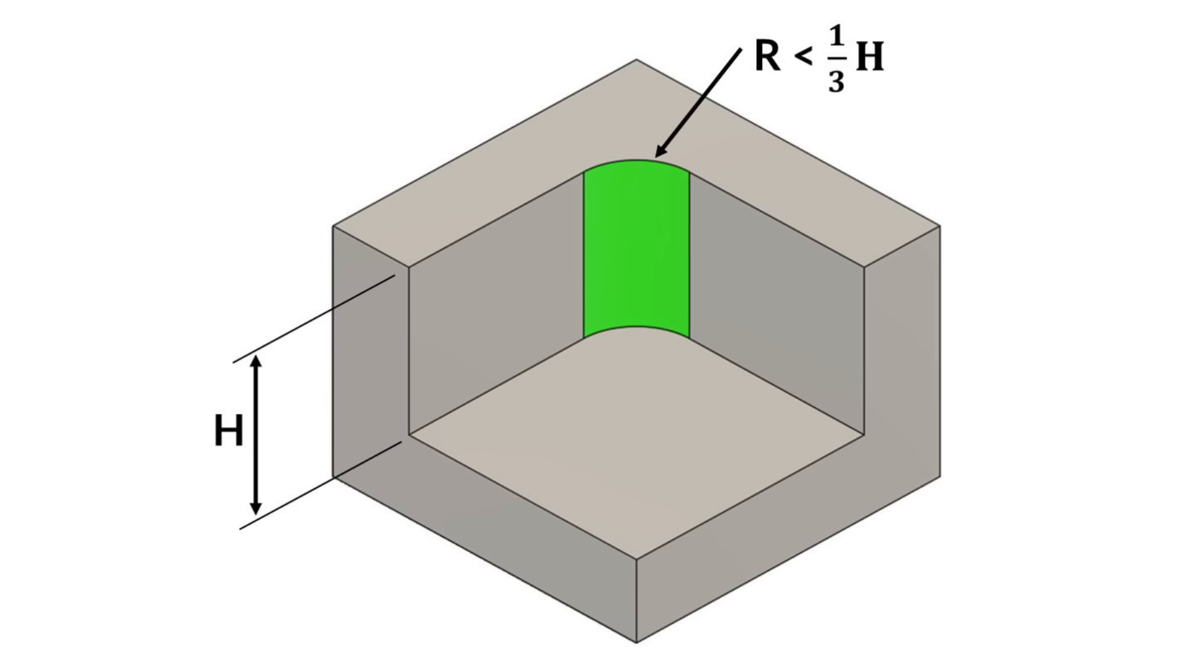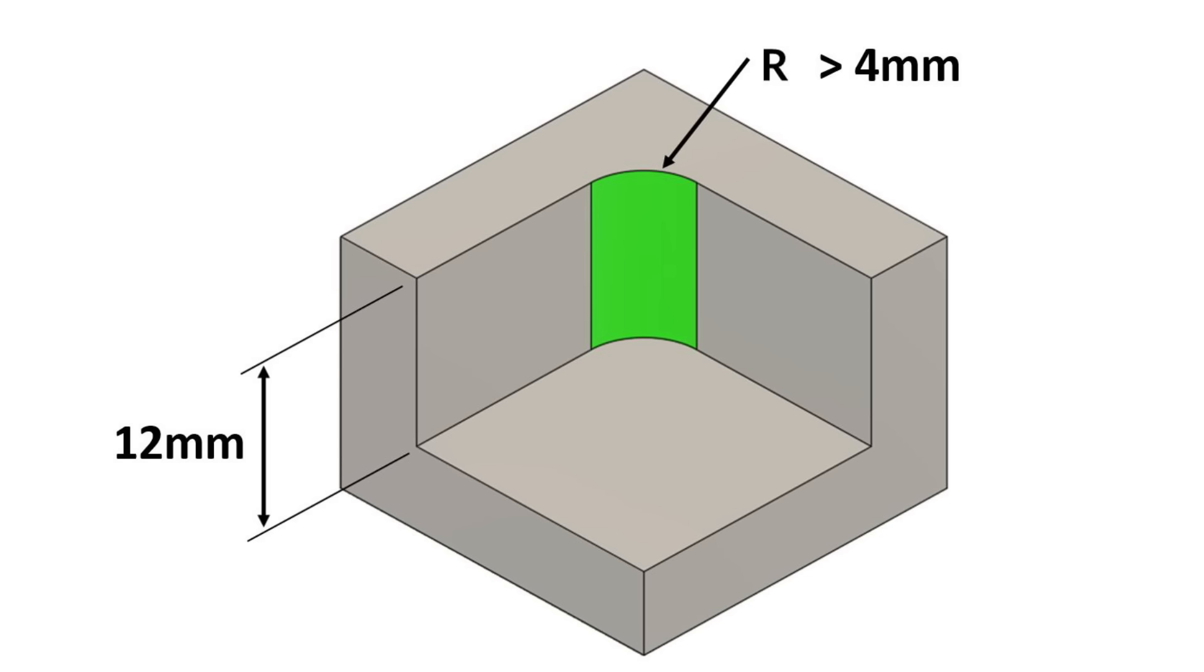Internal fillets should be as large as possible. This allows a large diameter tool to be used which will decrease machining time. As a rule of thumb, the radius should be less than one third of the height. So a 12mm deep pocket should use at least a 4mm internal radius. It is of course possible to have smaller internal fillets but the part cost will increase accordingly.